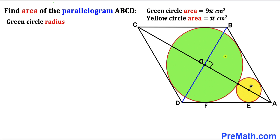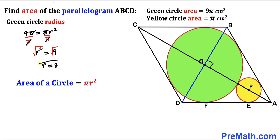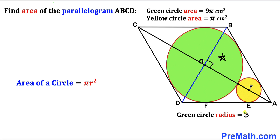Now let's calculate the radius of the green circle. Recall the area formula: Area = πr². The green circle area is 9π, so 9π = πr². Dividing both sides by π gives r² = 9. Taking the square root, the radius of the green circle is 3 cm.